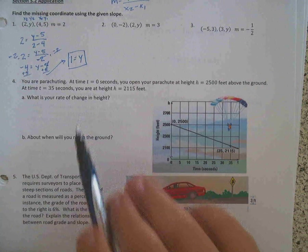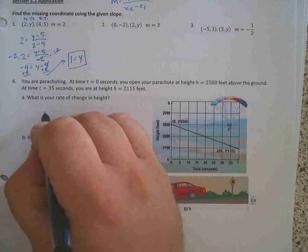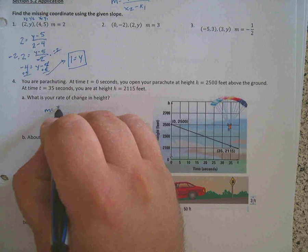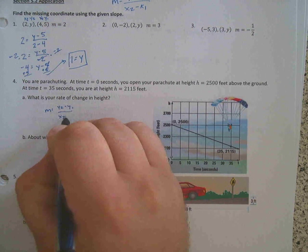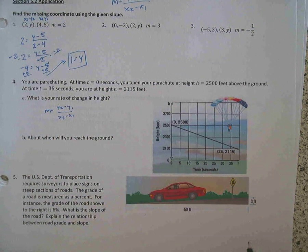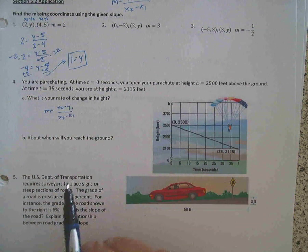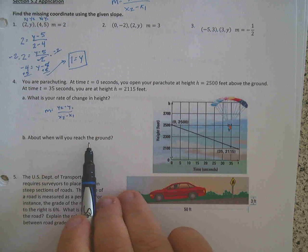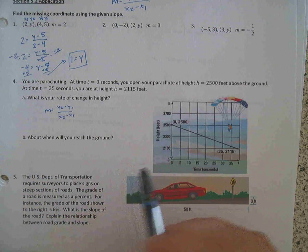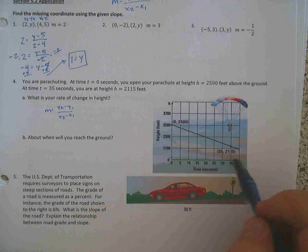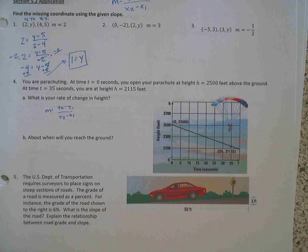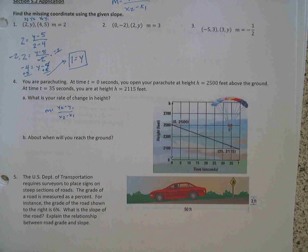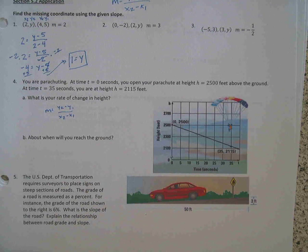So to find your rate of change, you're going to be looking at your slope. Just give it a y2 minus y1 over x2 minus x1. And then the next question says about when will you reach the ground. You're going to have to use your slope and see what happens when you do your slope again. You can extend your graph if you want to. And really, you're just approximating. But I'm going to leave that one to you.